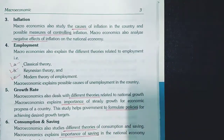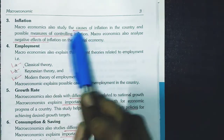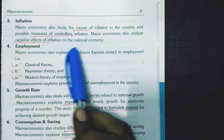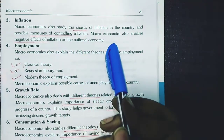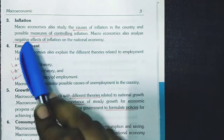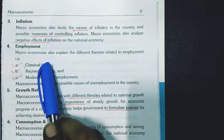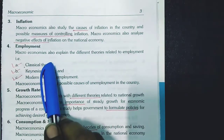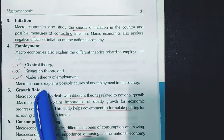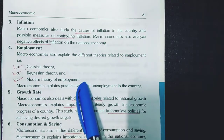The third point is inflation. Macroeconomics tells you about the causes, the measures to control inflation, and the negative impact of inflation on the national economy. The fourth point is employment. Macroeconomics discusses the different theories of employment — classical theory, Keynesian theory and modern theory of employment.